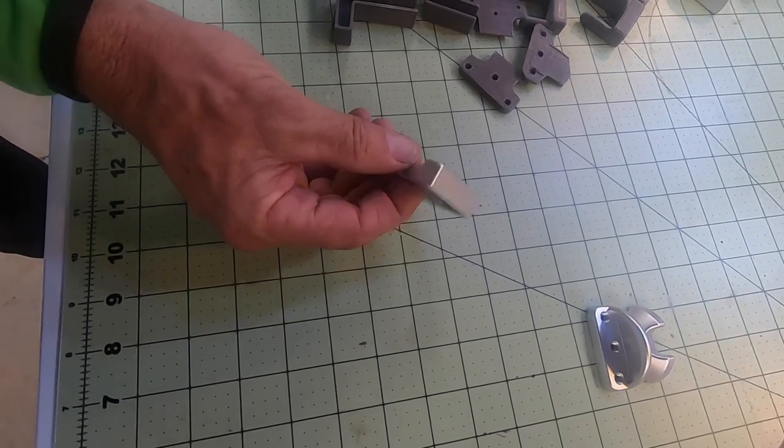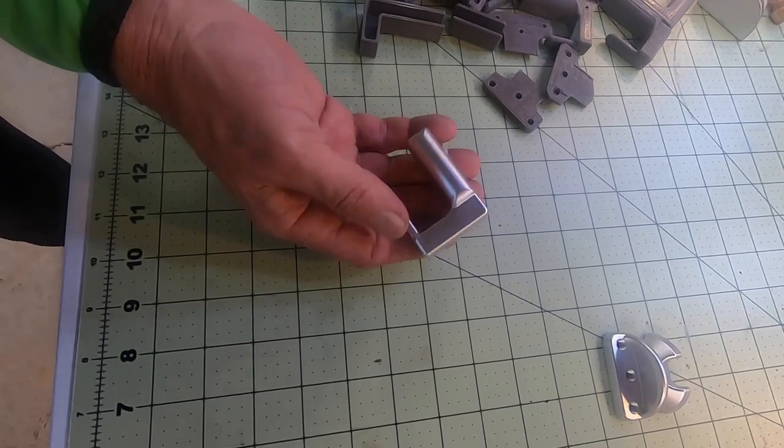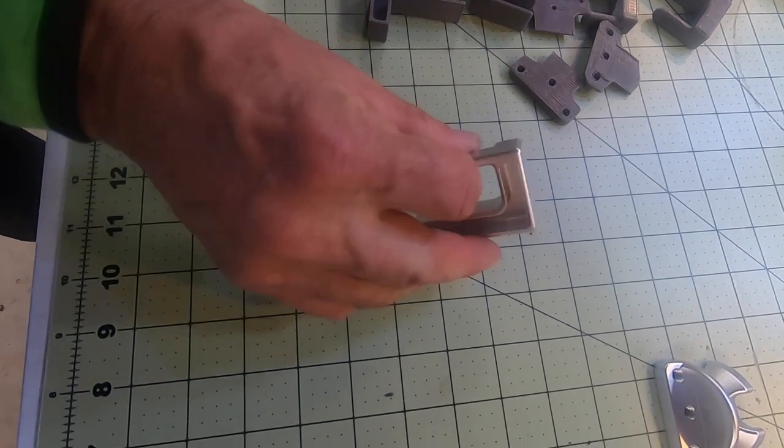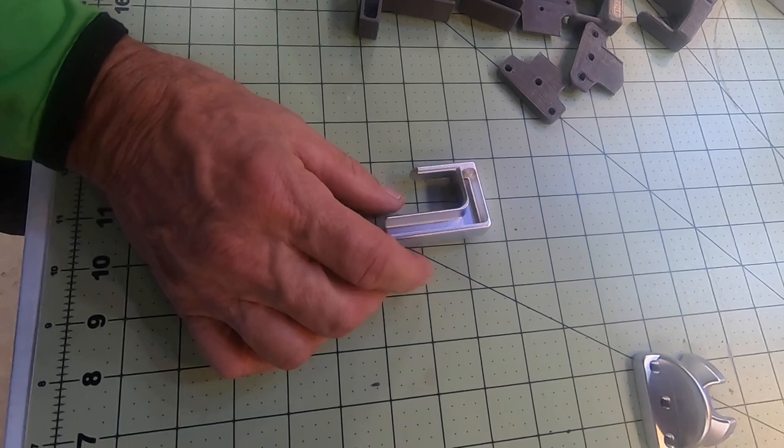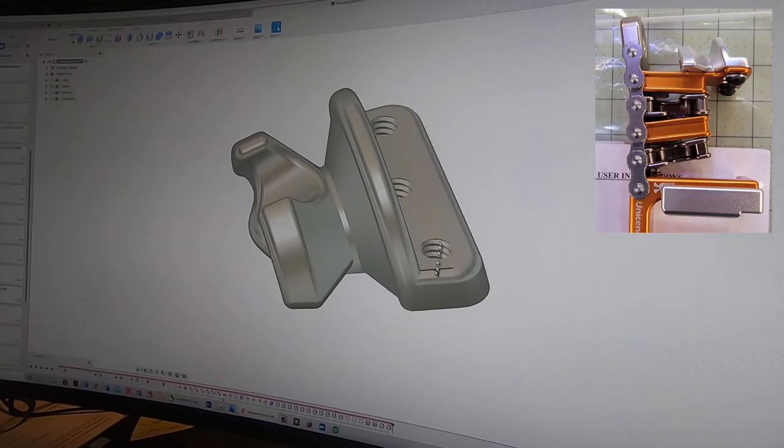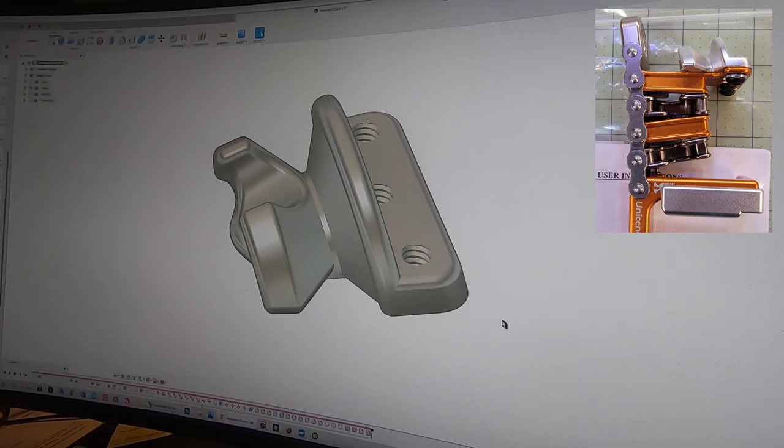And then we also came up with a piece for the bottom L bracket to keep the L bracket from wearing out, because if it wears out then the whole thing is kind of messed up. You got to have that L bracket to work, so we'll show you how that gets installed.